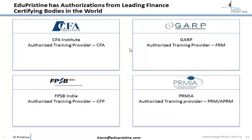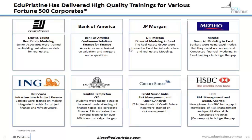Some of the Fortune 500 corporate companies that have gone with EduPristine for specific kinds of training are shown on this slide. I have personally, in varying parts of my career over the last 20 years, touched Bank of America, Ernst & Young, J.P. Morgan, Mizuho — I've lived in Japan for a long time — ING in Amsterdam, Credit Suisse, and HSBC. The only one on that slide I haven't personally been in touch with is Franklin Templeton. I have done training in HSBC, Credit Suisse, and Mizuho Bank, and I know how particular they are about choosing trainers.